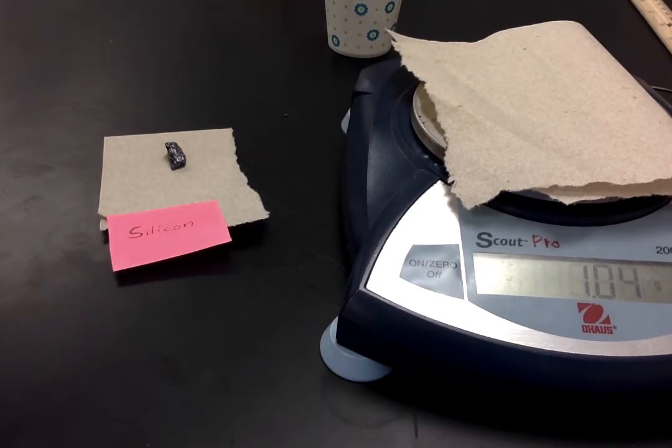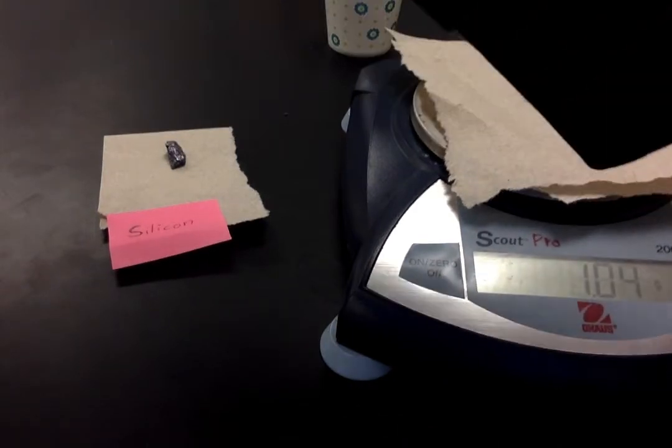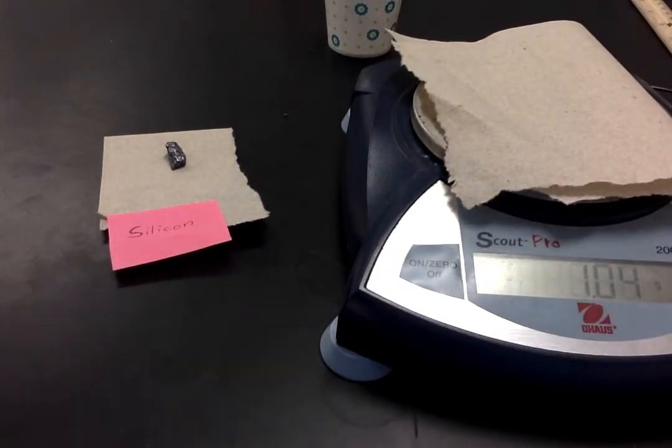And so what we're going to do is try to determine the density of silicon. We're going to do that the way we've been doing it. We're going to find the mass, determine the volume using water displacement, and then you're going to calculate the density.